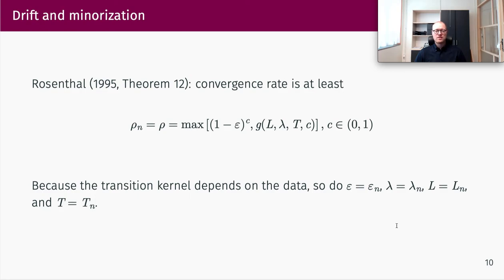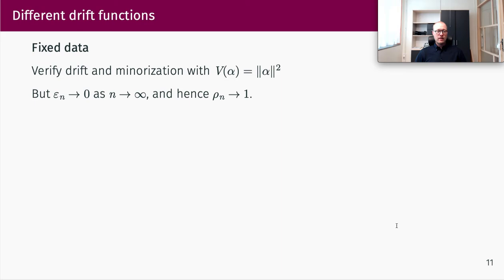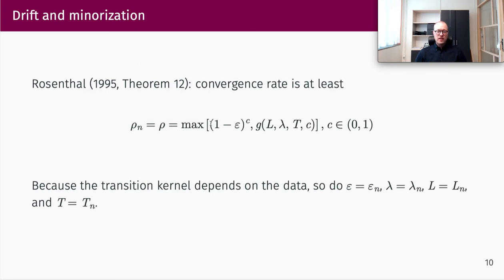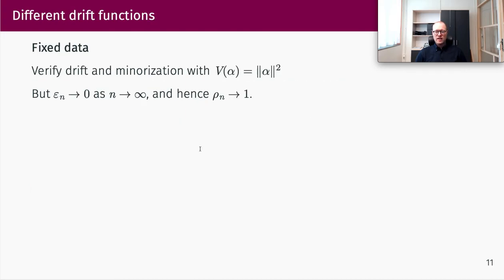The transition kernel depends on the data, so all quantities in the drift and minorization conditions can also depend on N. With fixed data, we verify these conditions with a drift function equal to the squared Euclidean norm of alpha. However, we get an epsilon that tends to zero as N tends to infinity. If epsilon tends to zero, the convergence rate bound tends to one — that's not good for a growing data setting. So we need another drift function and another analysis to ensure that rho_N stays bounded away from one as N tends to infinity.